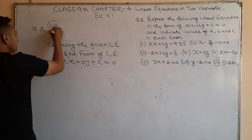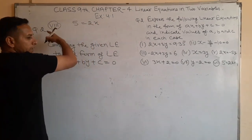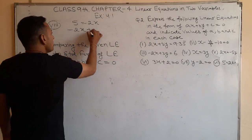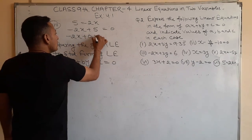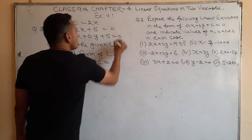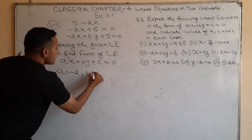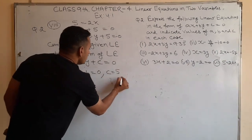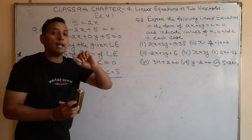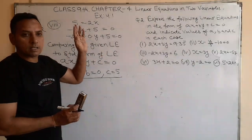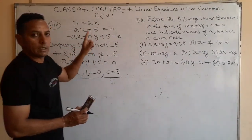Last part: 5 is equal to 2x. Transposing: minus 2x plus 5 is equal to 0, and we write minus 2x plus 0 into y plus 5 is equal to 0. So a equals minus 2, b equals 0, and c equals 5. Even though this is a linear equation in one variable, we compare it with the two-variable standard form, so y is missing and we write 0 into y.